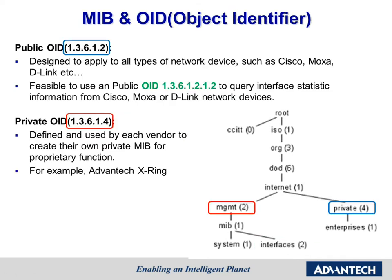Here are examples of public OID and private OID. Vendors that embed an SNMP agent in their devices sometimes implement custom branches with their own fields and data points, like the blue square in the slide. However, there are also standard MIB branches that are well defined and can be used by any device, like the red square in the slide.